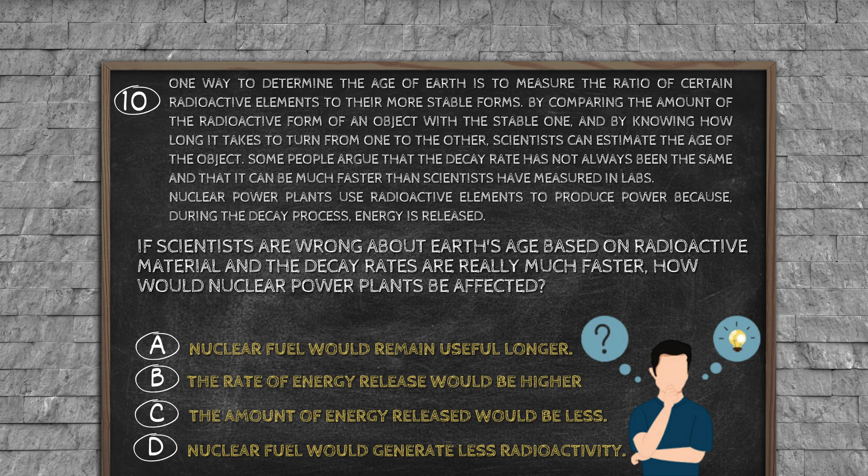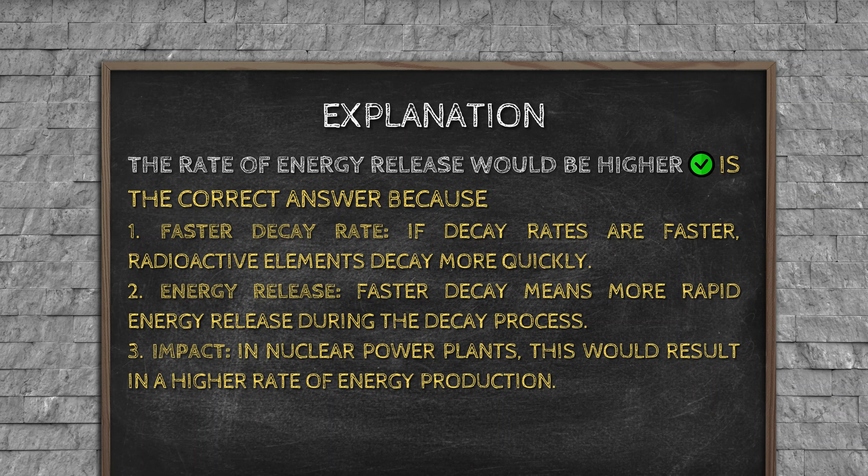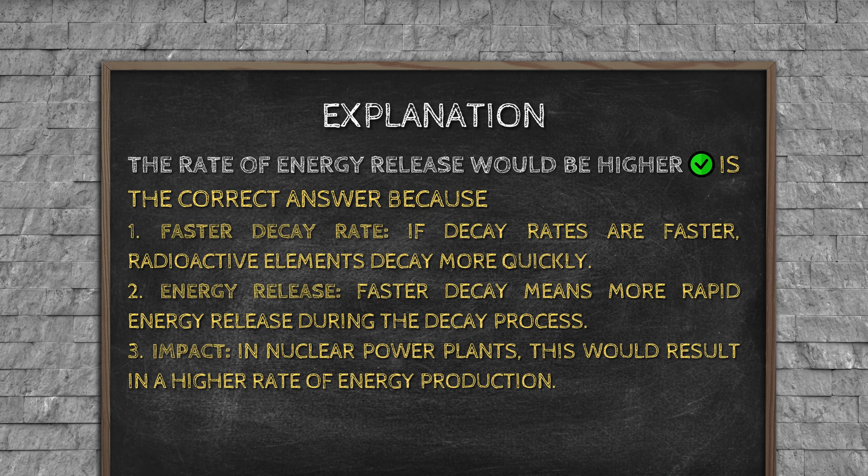Explanation: The rate of energy release would be higher is the correct answer because: 1. Faster decay rate: If decay rates are faster, radioactive elements decay more quickly. 2. Energy release: Faster decay means more rapid energy release during the decay process. 3. Impact: In nuclear power plants, this would result in a higher rate of energy production.